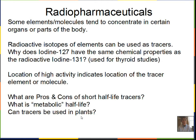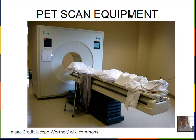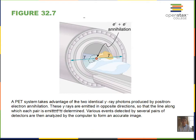Here is a positron emission tomography (PET) scanner. Certain radioactive isotopes emit positrons — a positron is an antimatter electron, a positive electron. When it comes into the vicinity of a regular electron, they both annihilate: they disappear and their mass becomes gamma rays emitted in opposite directions. The detectors in the PET equipment detect these simultaneous gamma rays and analyze where the radiation came from.